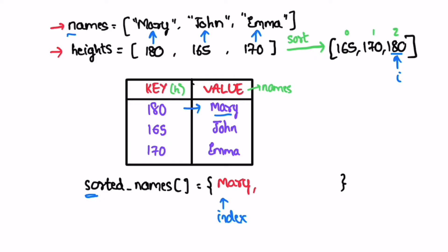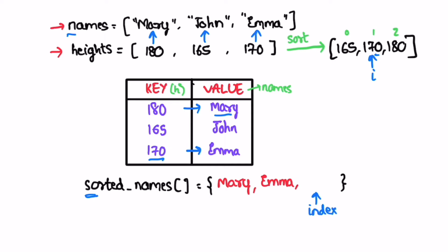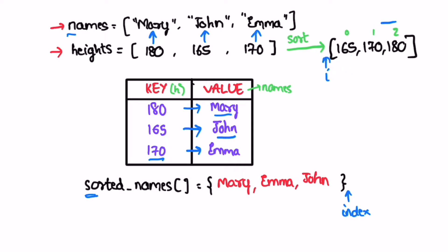We increment the index variable to add the next name and decrement i to access the second max height. We check if 170 is present in the map — yes it is — so we get its respective value Emma and add it into sorted names. We increment index and decrement i to access the next element. We check if 165 is present — yes — so John is accessed and entered into sorted names. Once you cross the first index position while iterating from right to left and come out of the array, you end the iteration and return whatever is inside the sorted array.